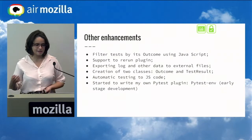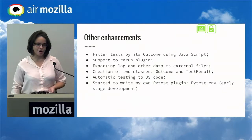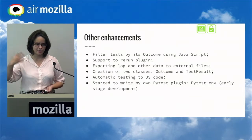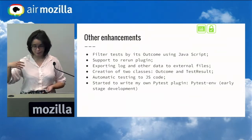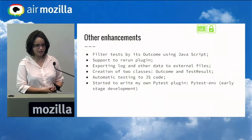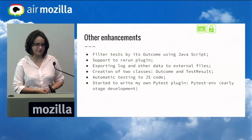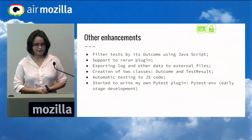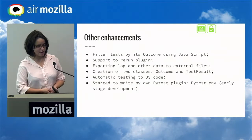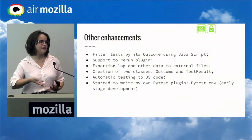Another enhancement is that the plugin is now more object-oriented. We have more classes because before it was just a file with functions. Now we have two classes: Outcome and TestResult. Outcome is used when you want to add a new outcome, and because of that we could add the re-run outcome very quickly, because it was a new outcome that was created.